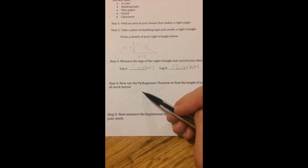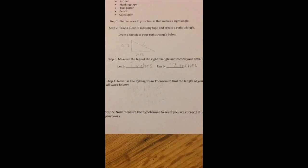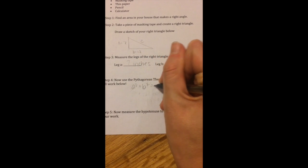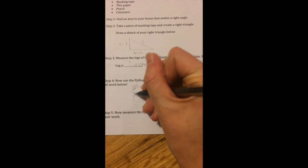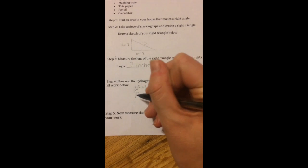Now we're going to jump to step 4 and use the Pythagorean Theorem to find the length of our masking tape, also known as our hypotenuse. So a reminder, A squared plus B squared equals C squared. A is represented as 7, so we have 7 squared plus 12 squared, which is B, equals C squared.